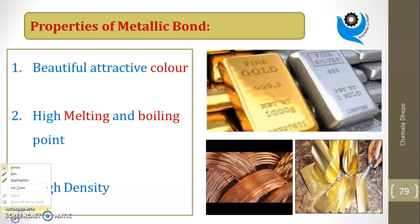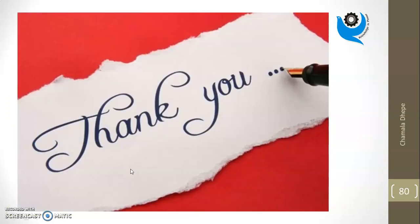These have beautiful attractive colors. You can see gold has attractive color, silver also has color, copper has peculiar color, this is aluminum. And metals have high melting and boiling points, and they have high density. So all these are the properties of metal. Thank you. This is about the metallic bond.